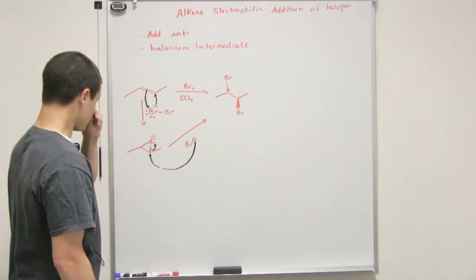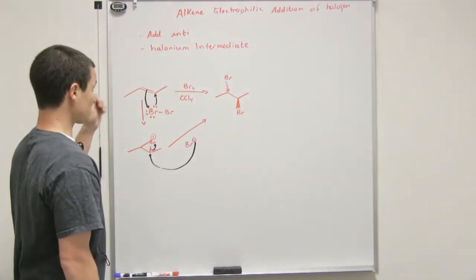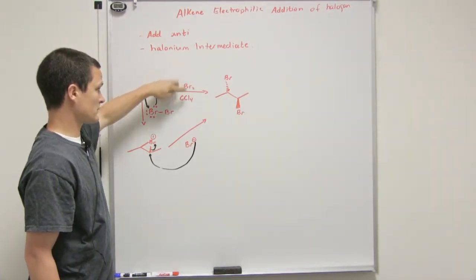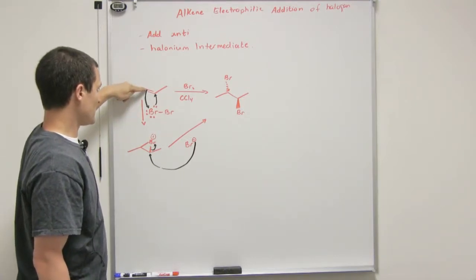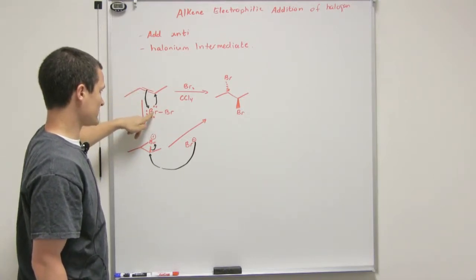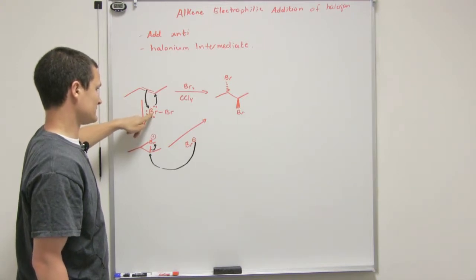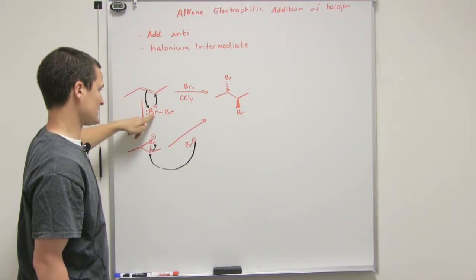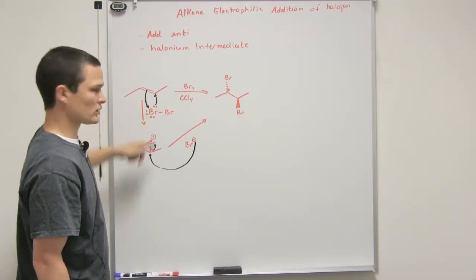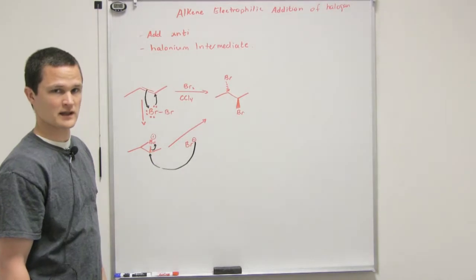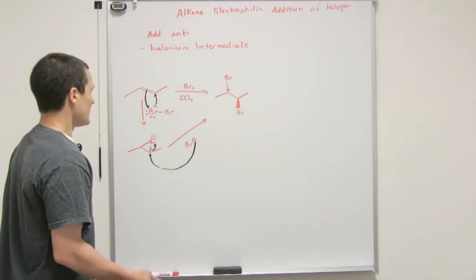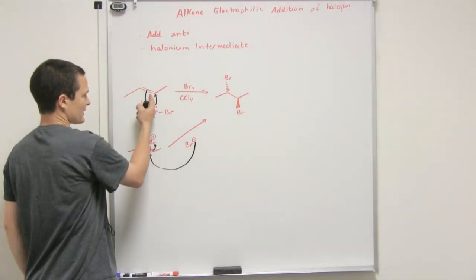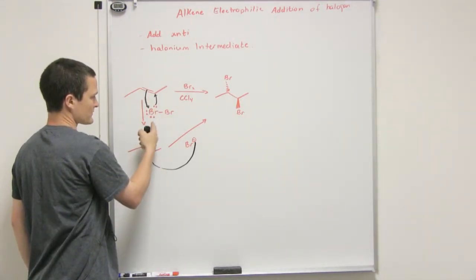Okay, so basically we have diatomic bromine and some polar solvent, and the alkene attacks one of the bromines as an electrophile because it doesn't have all of the electron density that it wants in the diatomic form, so it's somewhat reactive especially when you have a polar molecule like this.